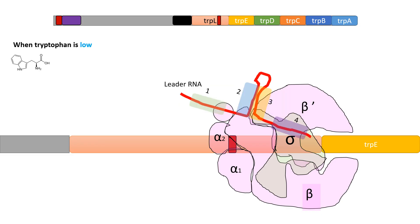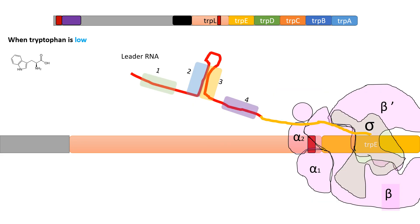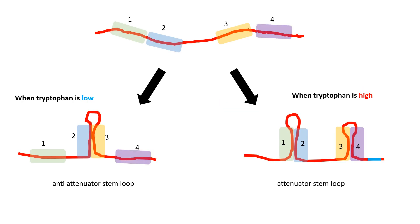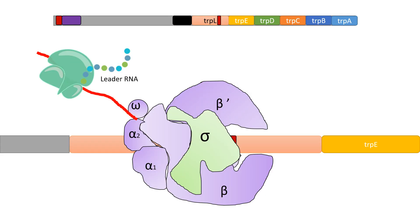When tryptophan is low, regions 2 and 3 pair, forming the anti-attenuator stem loop, and the downstream genes are transcribed. To summarize: when tryptophan is low, the anti-attenuator stem loop forms; when tryptophan is high, the attenuator stem loop forms and RNA polymerase falls off.